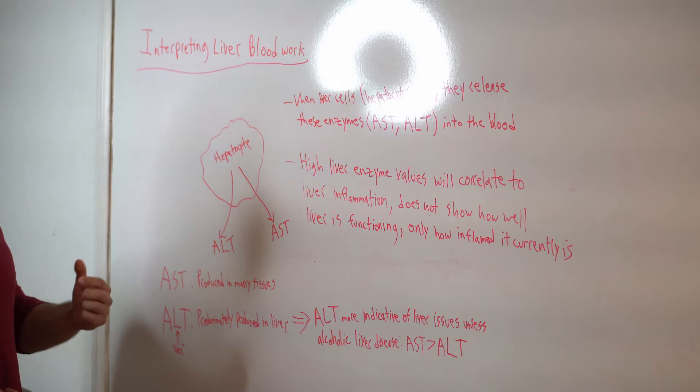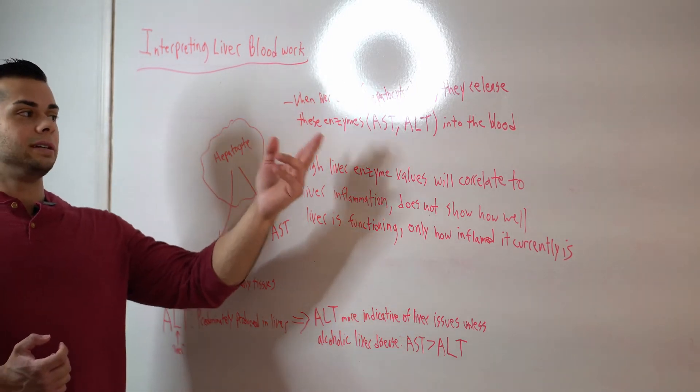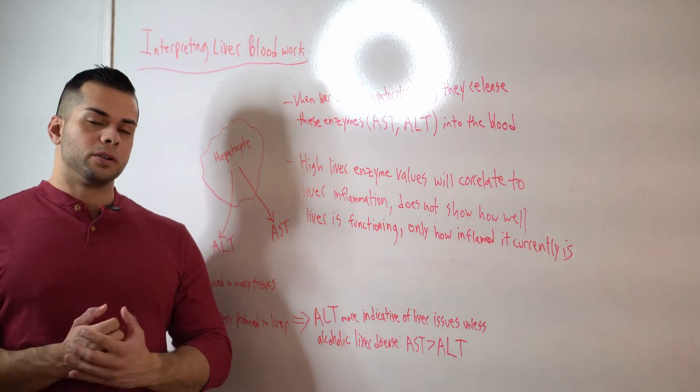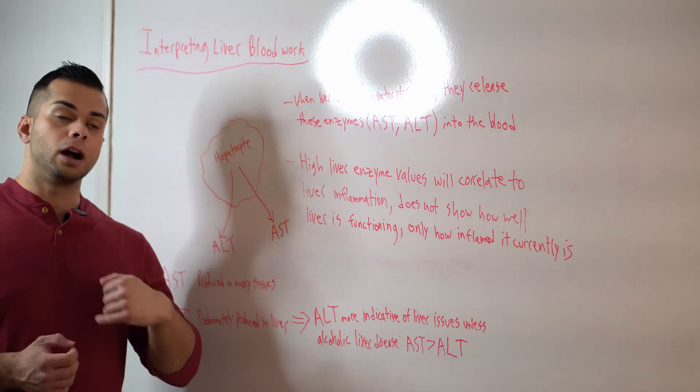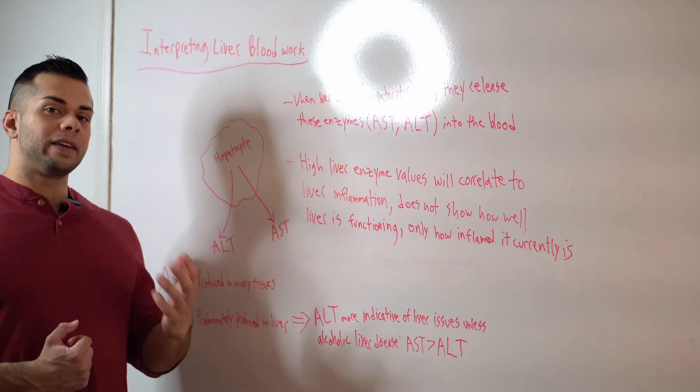So first off, most of you are familiar with the two liver enzyme values, AST and ALT. Now I'm going to talk a little bit about where those come from. So a normal healthy liver is not going to have high levels of AST and ALT.